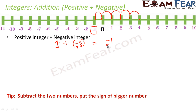So even without drawing the number line, you can directly add two integers. Whenever you have a positive integer and a negative integer, forget their signs and just find the difference. For example, if one number is minus 19 and the other is plus 22, find 22 minus 19. Then put the sign of the bigger number — positive if bigger is positive, negative if bigger is negative.